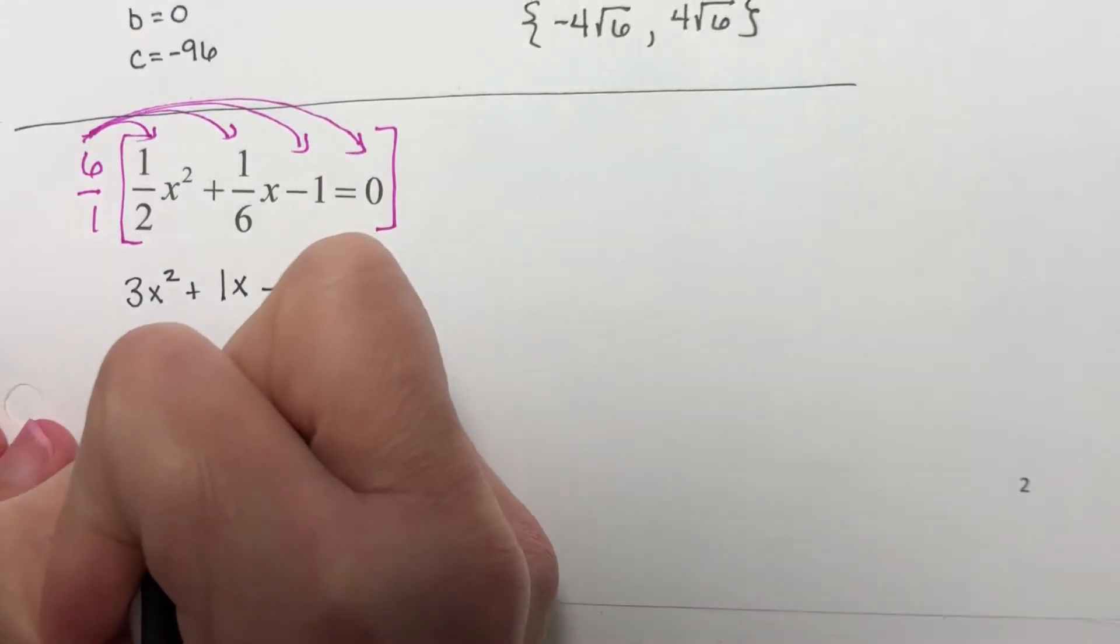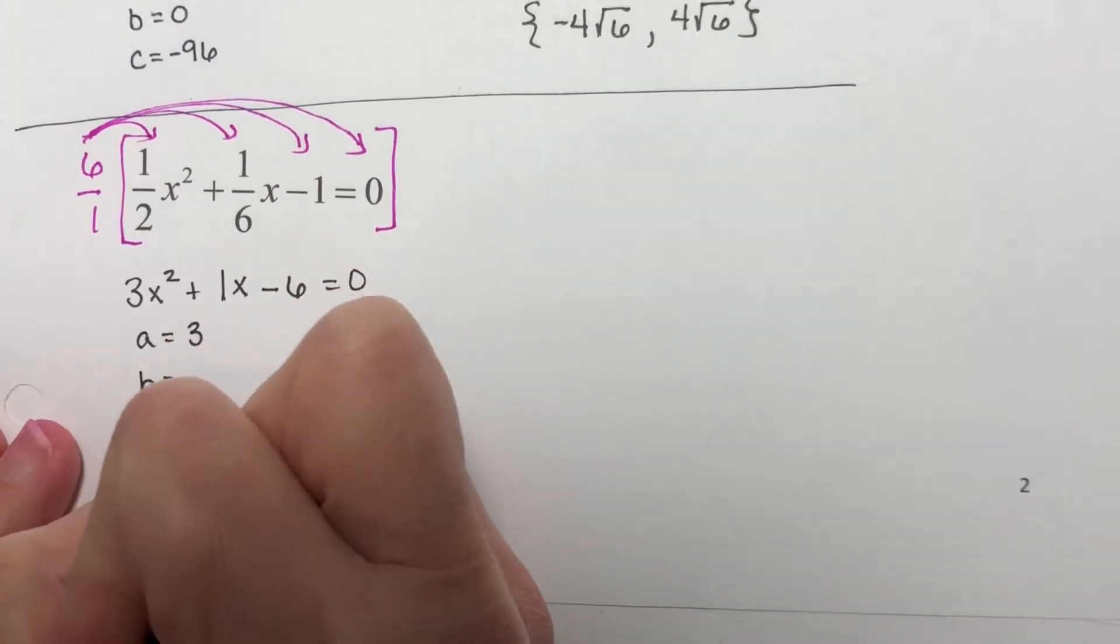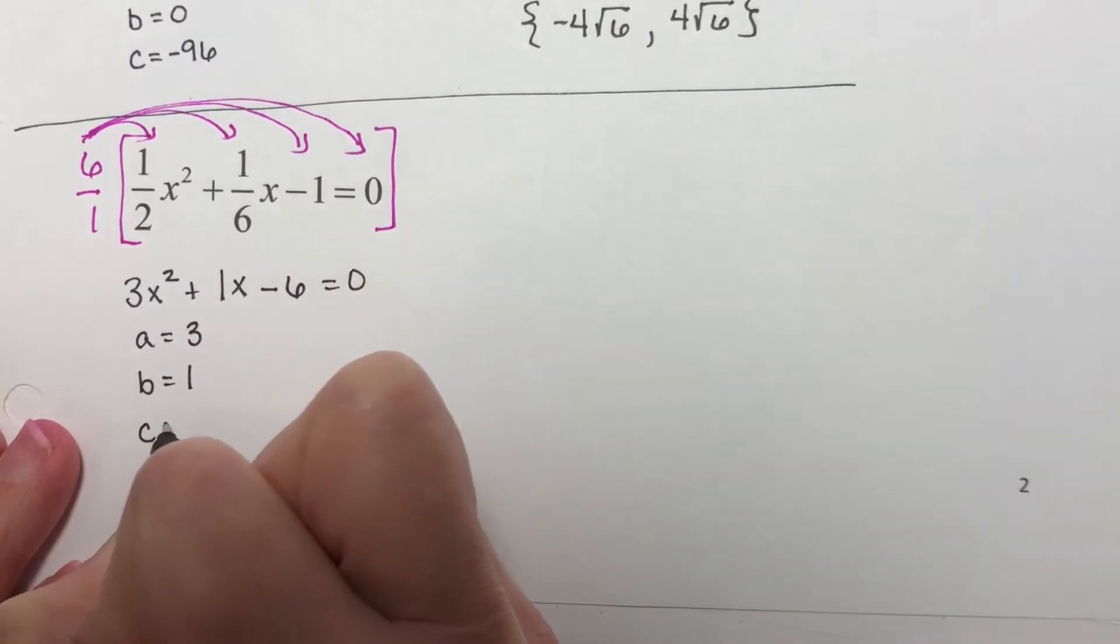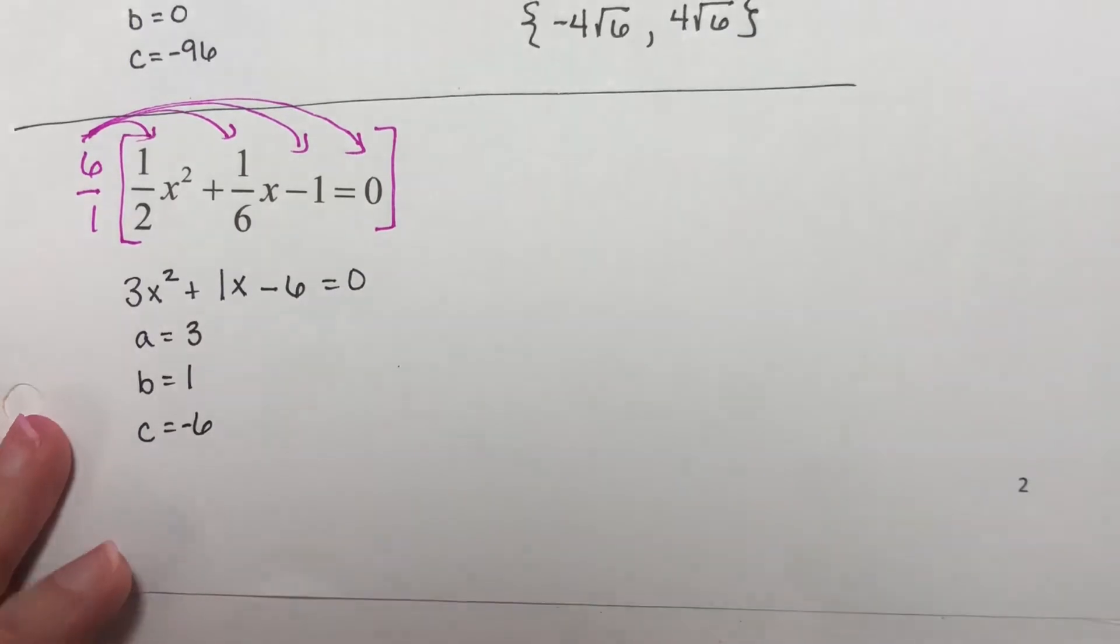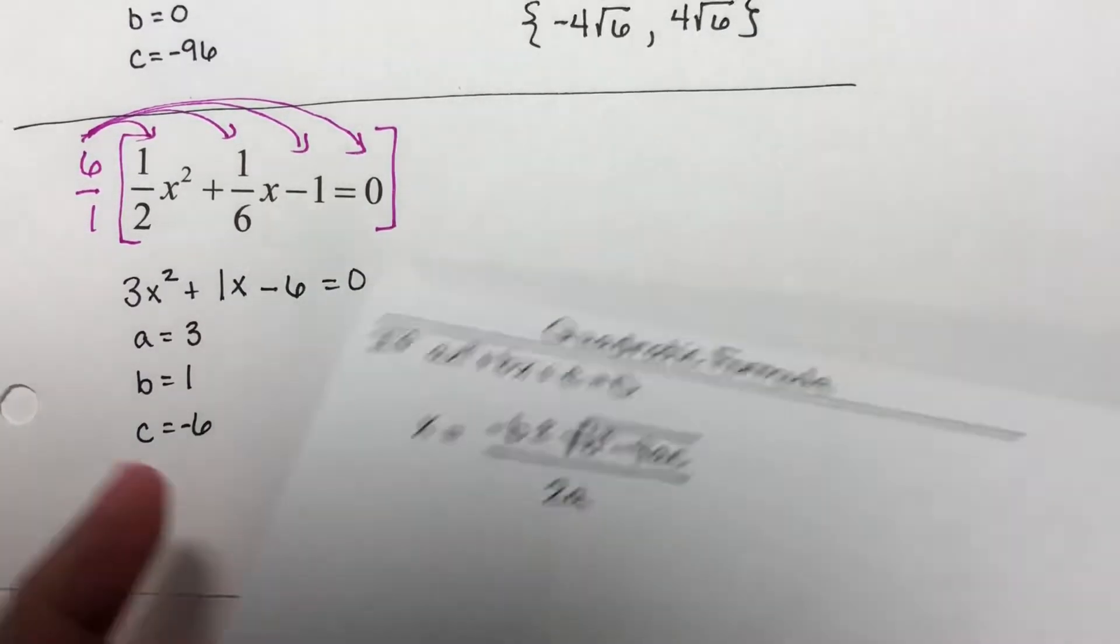So my a is 3, my b is 1, my c is negative 6. Now let's plug in to the quadratic formula.